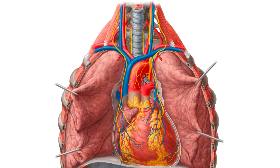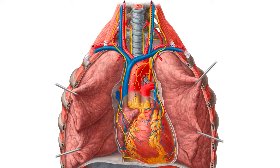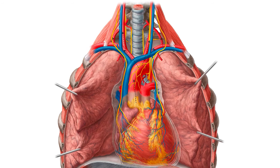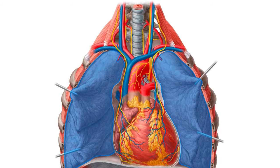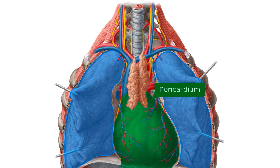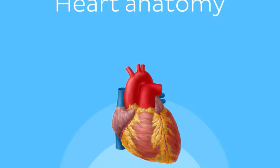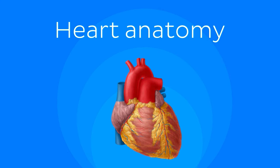We know that the heart is a muscular organ which pumps blood around the body. It is located in the middle mediastinum, which is a fancy name for the space between your two lungs, and covered in a strong, fibrous, double-layered sac known as the pericardium. Let's take a look at the general anatomy of the heart.